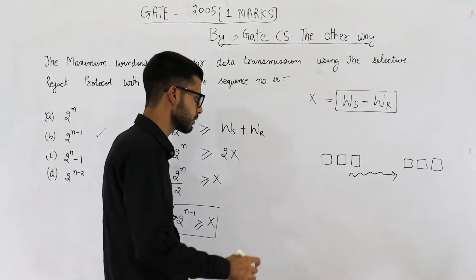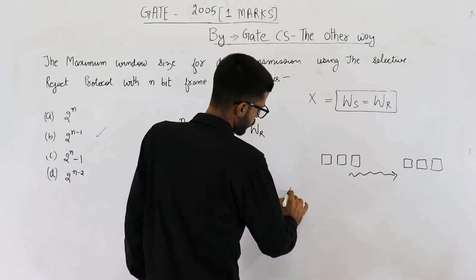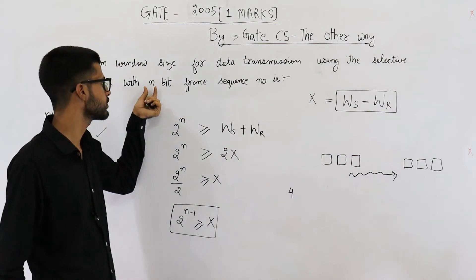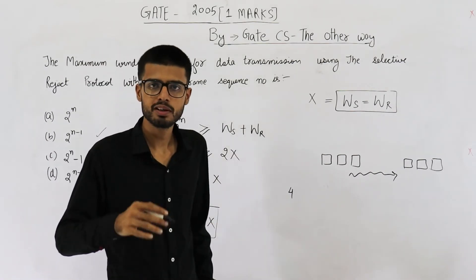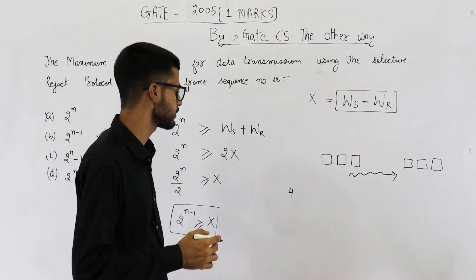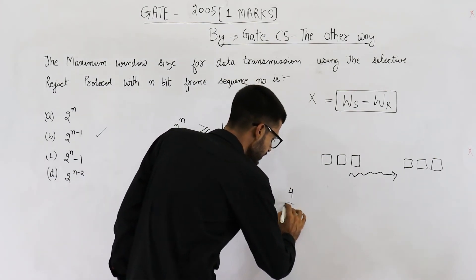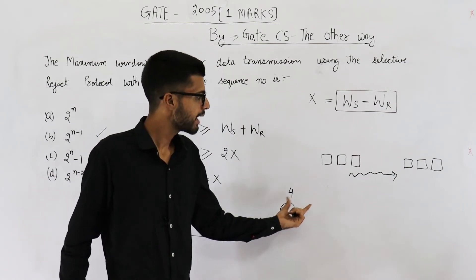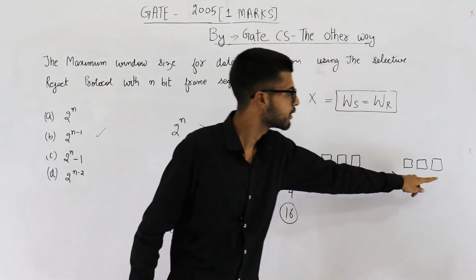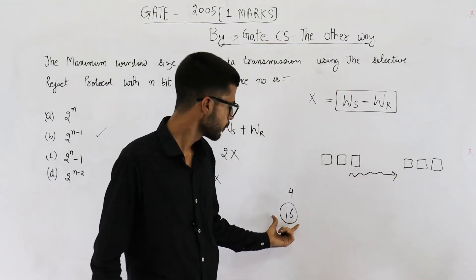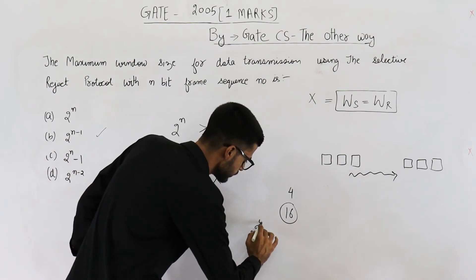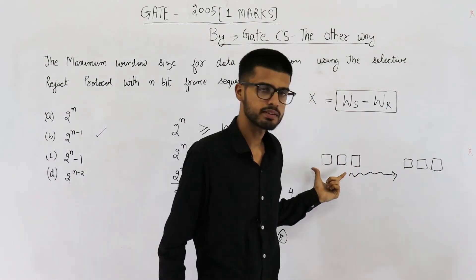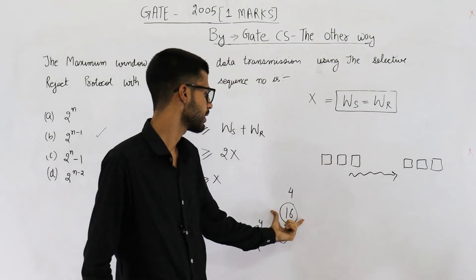Now suppose they have allowed say 4 bits. They have allowed 4 bits in sequence number field. That means value of n is 4. With 4 bits in the sequence number field, you can have 16 sequence numbers. 16 sequence numbers means maximum window at this side can be 8 and maximum window at that side can be 8. So 2 power n, 2 power 4 which is 16 divided by 2 which is 8. Maximum window can be 8. 8 on sender side and 8 on receiver side because 8 plus 8 will become 16.